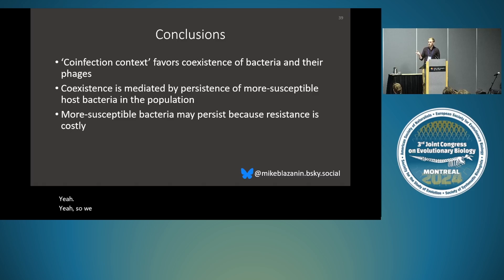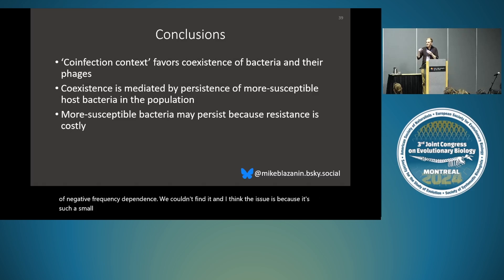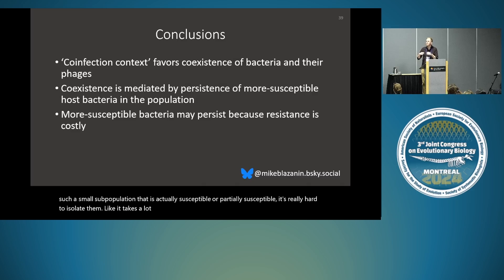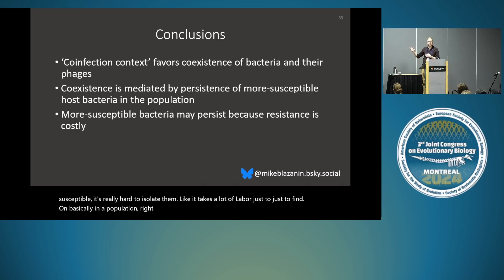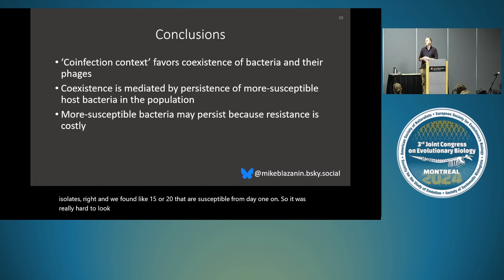We looked for cyclical dynamics or negative frequency dependence but we couldn't find it. I think the issue is that it's such a small subpopulation that is actually susceptible or partially susceptible — it's really hard to isolate them. It takes a lot of labor just to find one. We pulled about 500 or 600 isolates and found like 15 or 20 that are susceptible from day one on, so it was really hard to look for those dynamics.